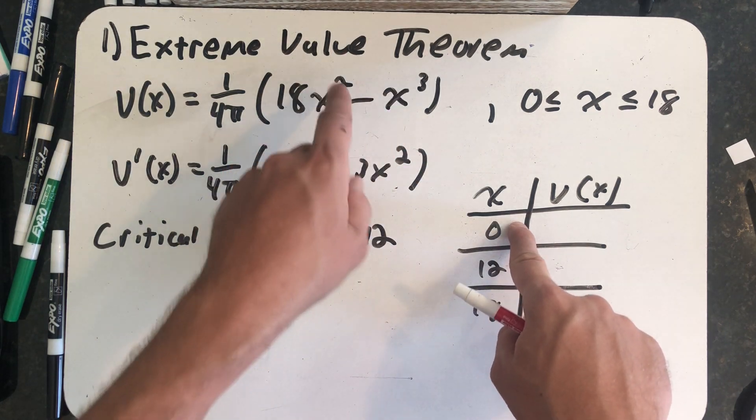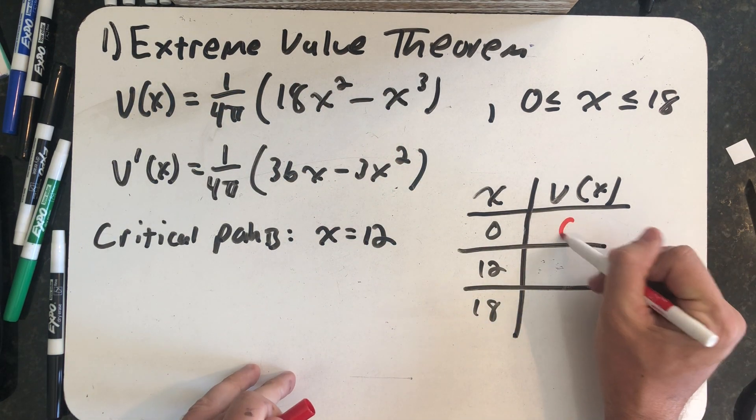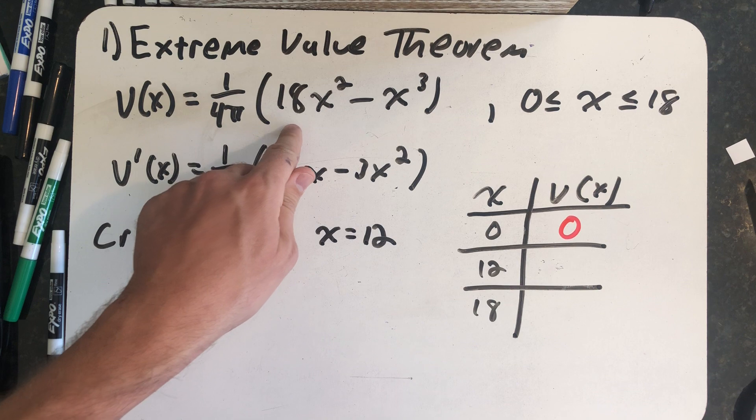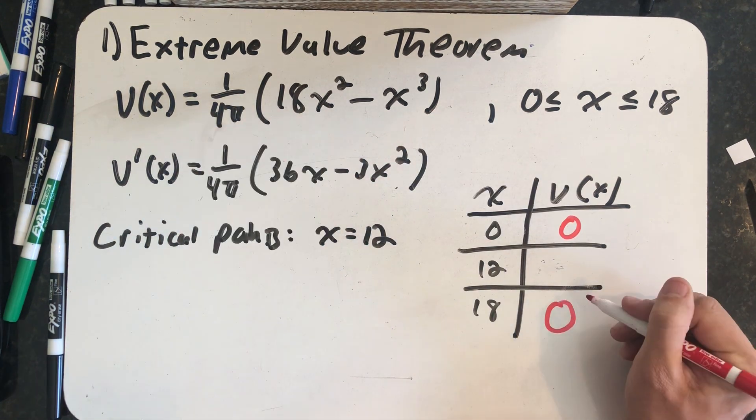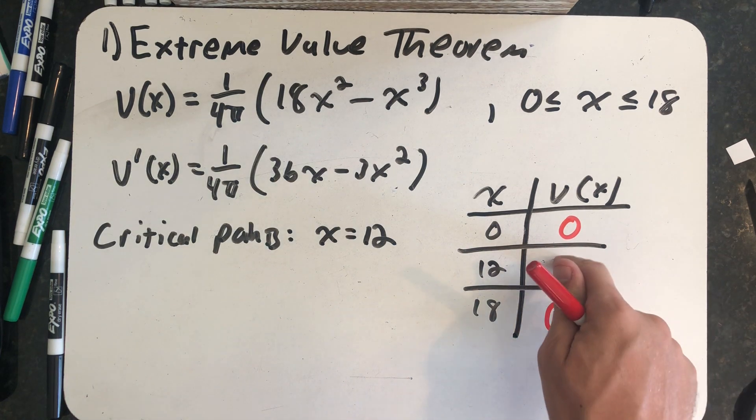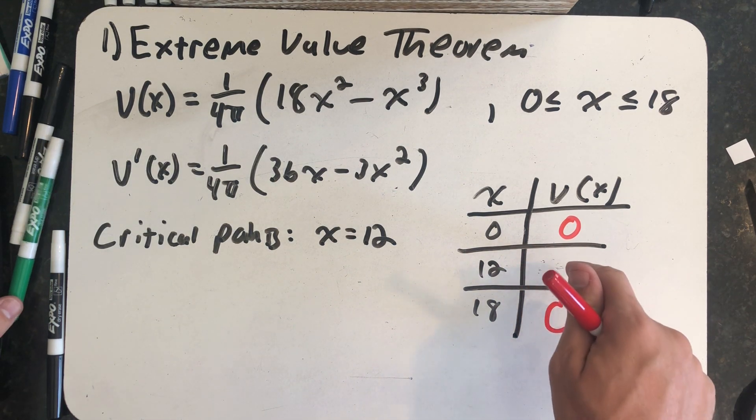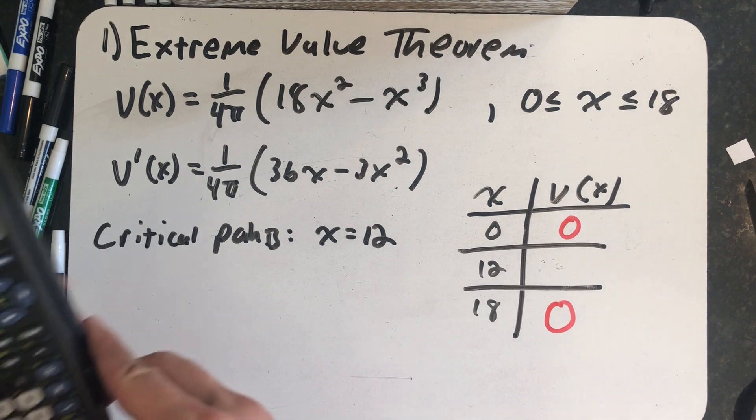If I plug in 0, the volume 0's out. If I plug in 18, I'll have 18 times 18 squared is 18 cubed minus 18 cubed. And the volume will 0 out. So I really only need to think about what the volume is when x is 12.